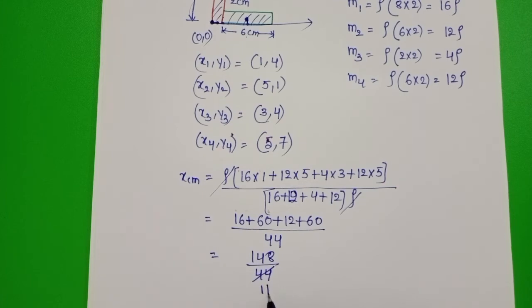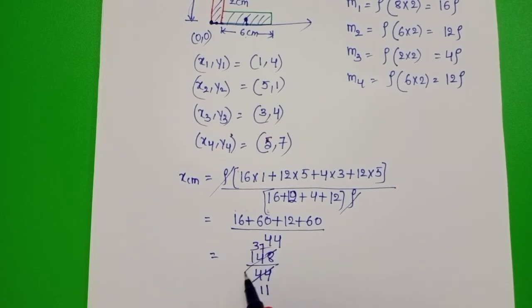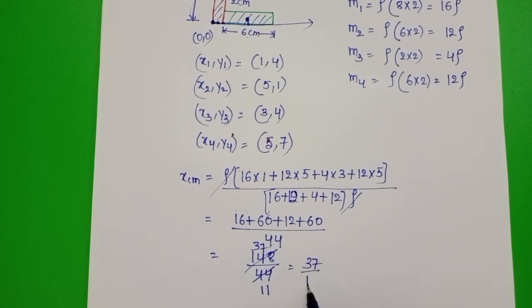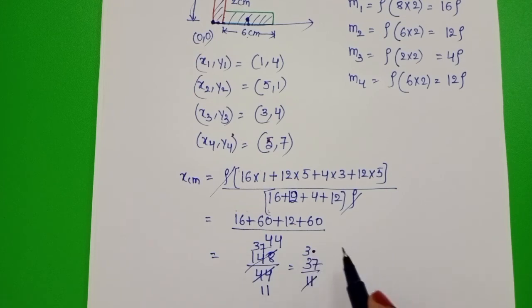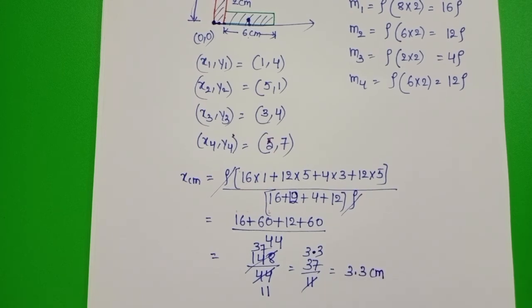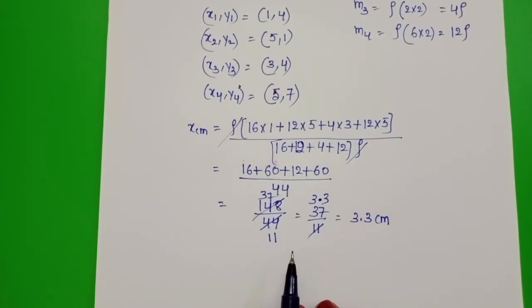148 divided by 44. Dividing: 37 by 11. Cancel with 11 - 11 times 3 is 33, and 0.4 remains. So approximately 3.3 cm.